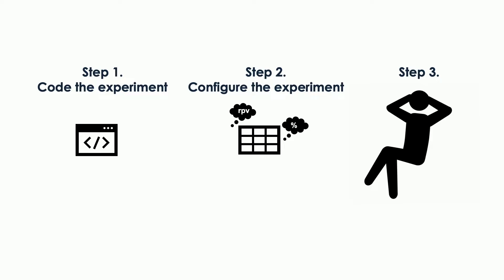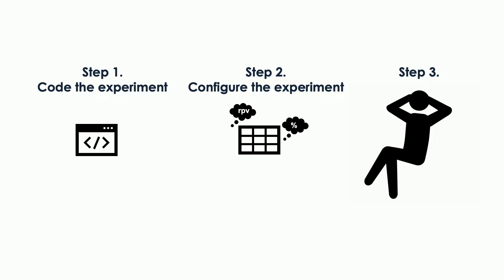Our idea was simple — we wanted teams to do as little work as possible. They just have to follow three simple steps: first, design the experiment and prepare the variants; then configure the experiment by specifying the success metric — conversion rate, revenue per visitor, or add to cart — and choose a 90% or 95% confidence level, written into a configuration table. After those two steps, they can just sit back and relax because we compute everything for them.